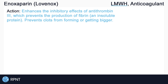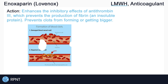They increase the anticoagulant effects of antithrombin 3, which inhibits clotting factors 2a and 10a — the same way heparin works. By inhibiting these clotting factors, it makes it harder for the blood to clot. Clotting factors 2a and 10a are normally responsible for helping to produce fibrin.